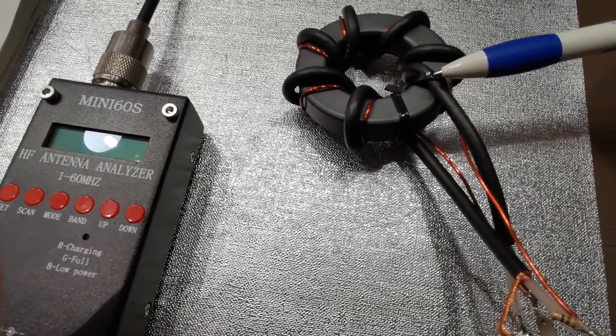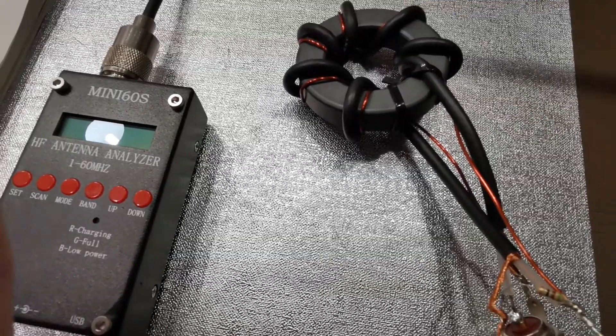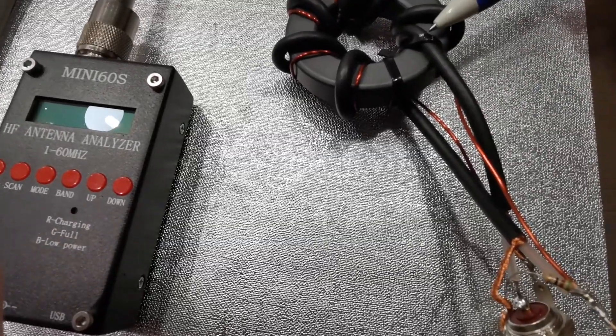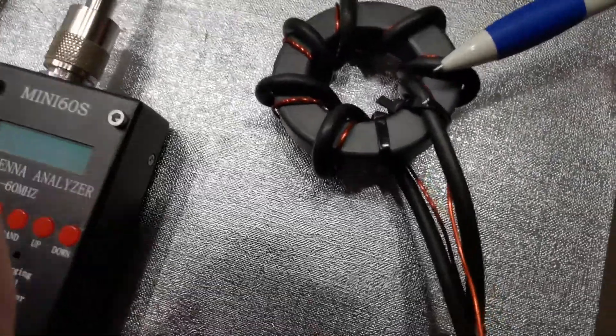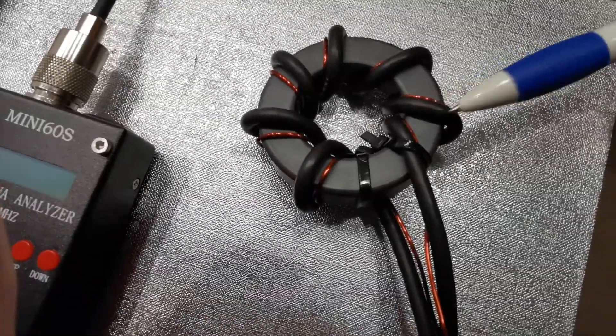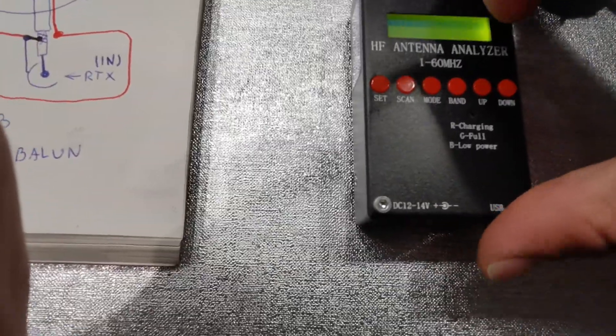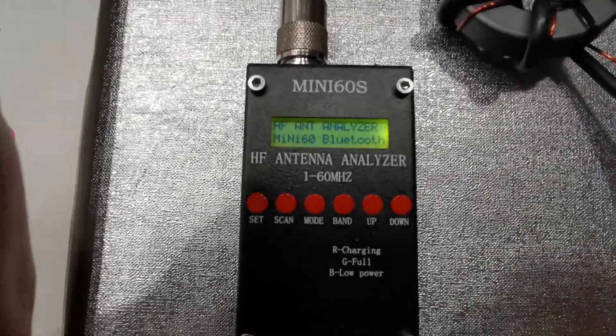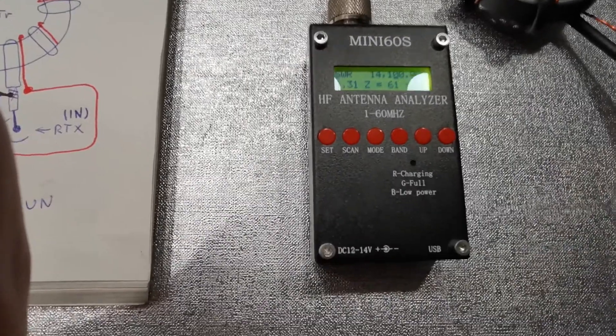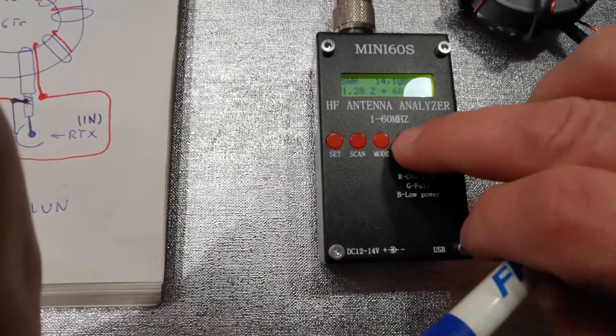If you need the balun to work from 160 meter band, you should make eight or nine turns, also with the extra wire which you can see. I have my simple antenna analyzer, made in China of course.